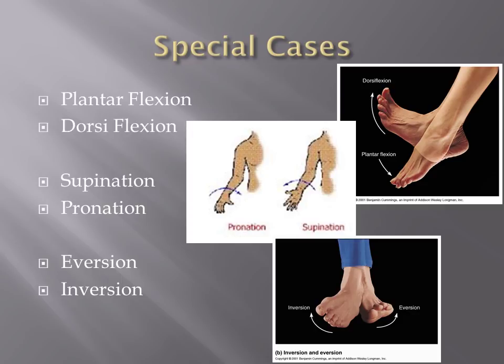You've got your dorsiflexion and plantar flexion, which basically describes your foot movement. Dorsiflexion means flexing the foot upwards towards your shin. Plantar flexion means pointing it downward. The dorsal side is actually the top of your foot — that's why it's called dorsiflexion. The plantar side is the bottom of your foot, and that's why they call it plantar flexion.